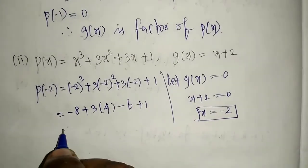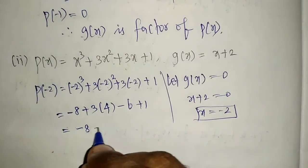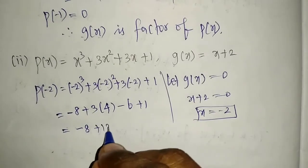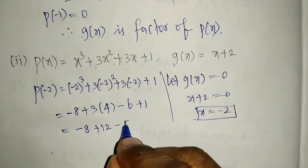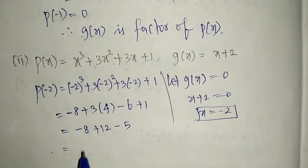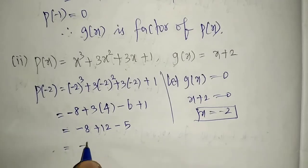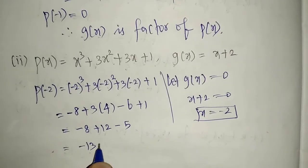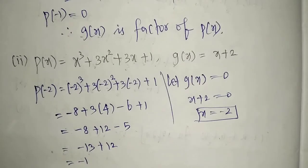Continuing: minus 8 plus 12 minus 6 plus 1. We get minus 8 plus 12 equals 4, then minus 6 gives minus 2, plus 1 gives minus 1. Wait — minus 8 plus 12 is plus 4... let me simplify: minus 8 plus 12 minus 6 plus 1 equals minus 13 plus 12, giving a final answer of minus 1.